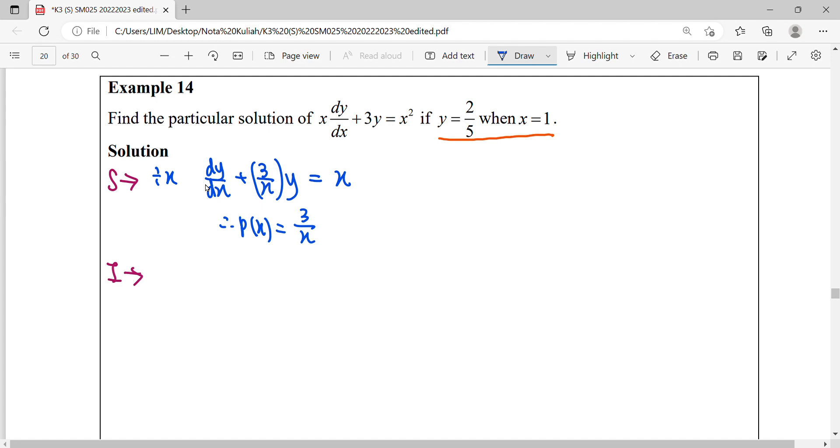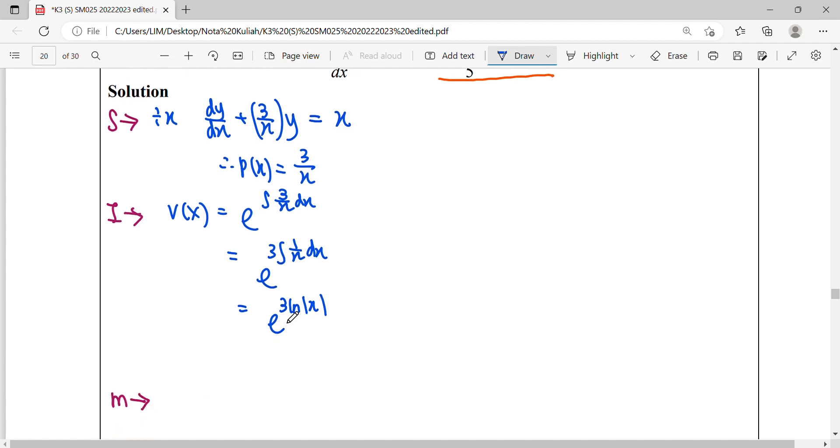For this 3/x, we proceed to the second step: finding v(x), the integrating factor. The formula is exponential of the integral: e^(∫3/x dx). We integrate 3·1/x to get 3 ln x. When you see e to the power of ln, use the property of logarithms: 3 moves up as a power, giving e^(ln x³), which simplifies to x³.